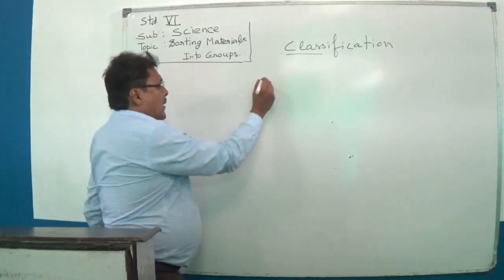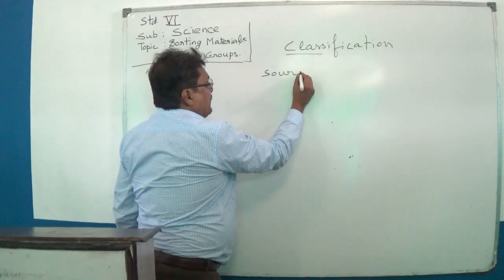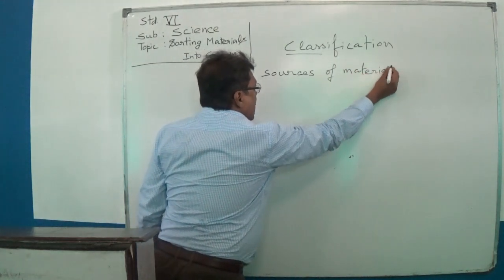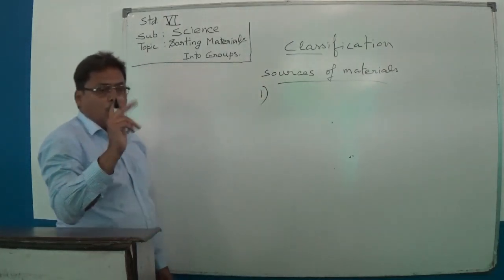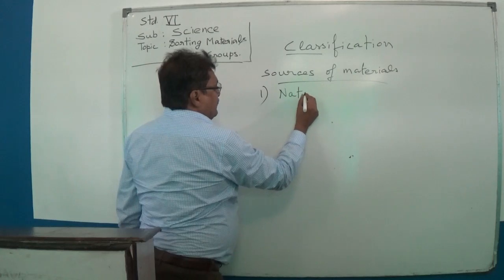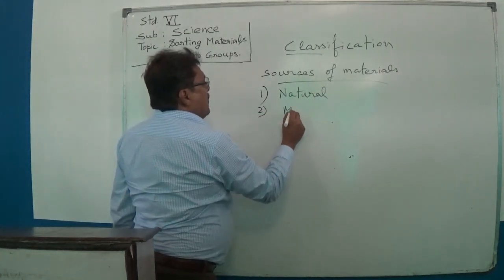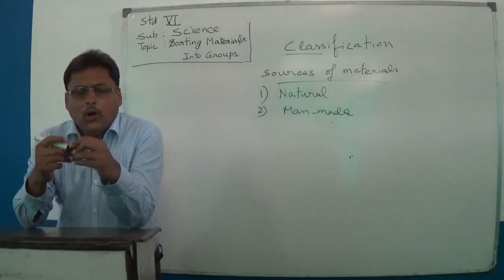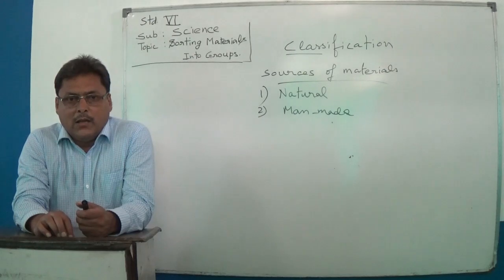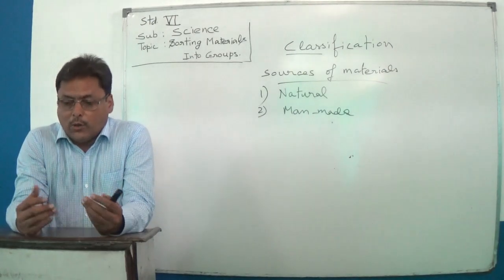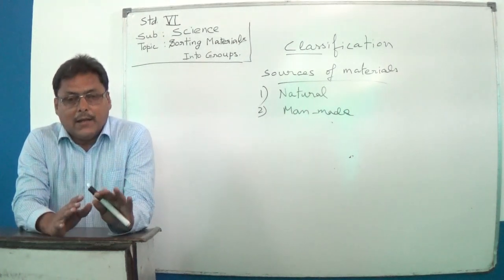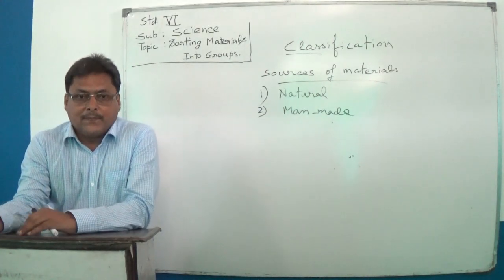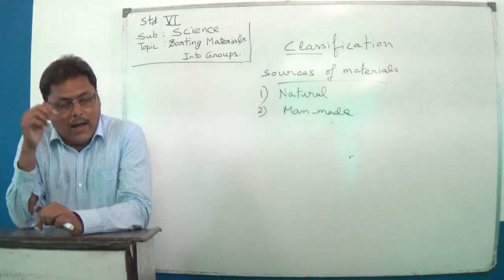When we classify materials according to their sources, we have two groups: one is natural, and the second is man-made. Some things we get from nature — we get wood from nature, we get all the seeds, crops, water from nature. But we make plastic; we make special glasses like spectacle lenses — they are made by human beings.